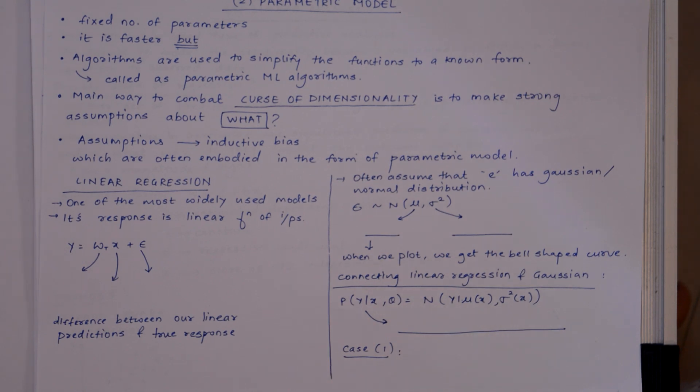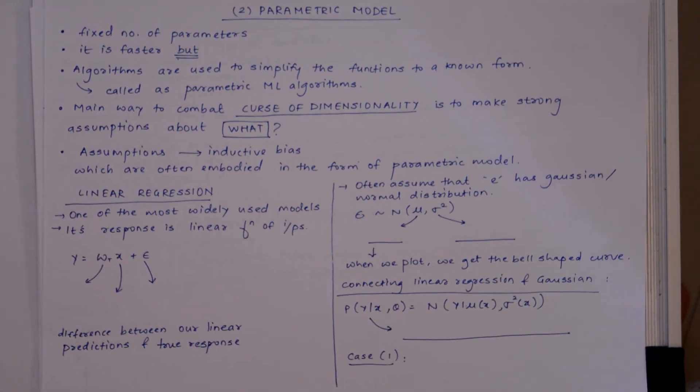We can say that the main way to combat the curse of dimensionality is to make some assumptions about the nature of the data distribution. It may be like supervised or unsupervised problem, but the main way to combat is to make some assumptions.